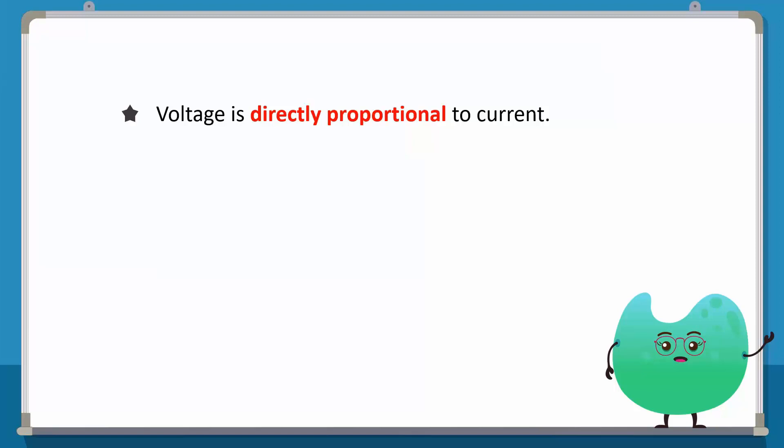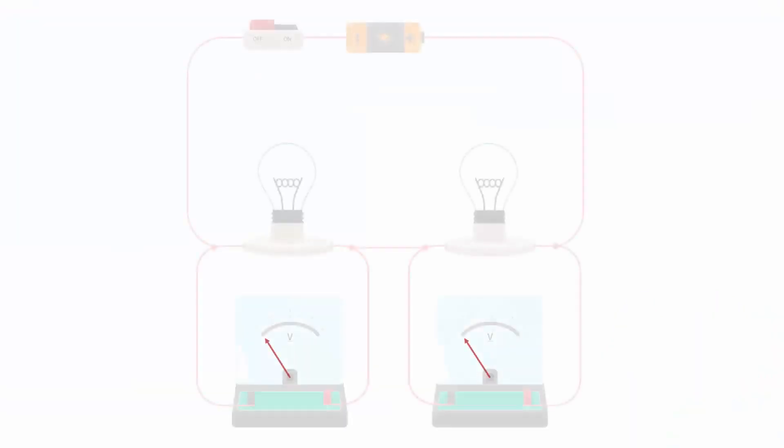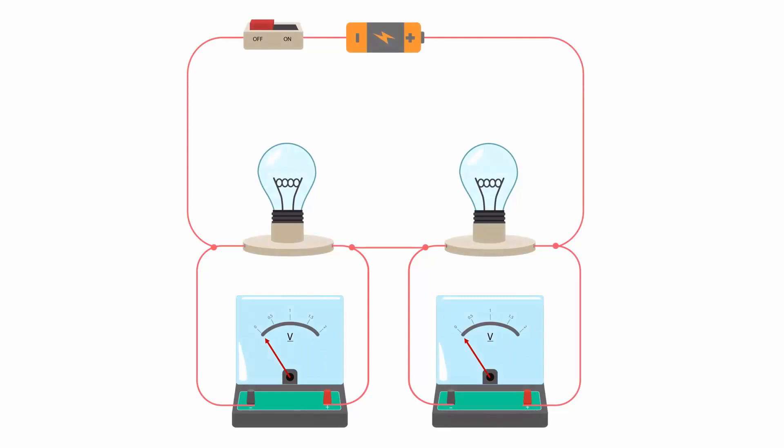Let's do another experiment. Consider a circuit with two bulbs. Bulb A has a resistance of 100 ohms and bulb B has a resistance of 200 ohms. Switch on the circuit.